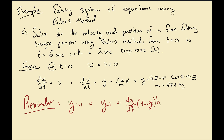Each variable is not called y, so we expand it. For displacement: xi+1 = xi + (dx/dt) as a function of all variables — ti, xi, vi — times h.